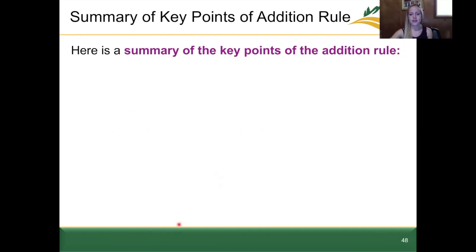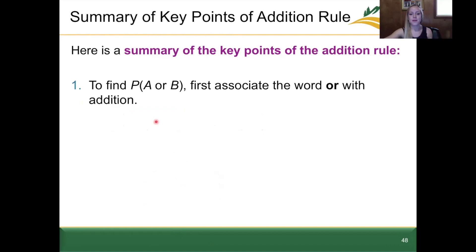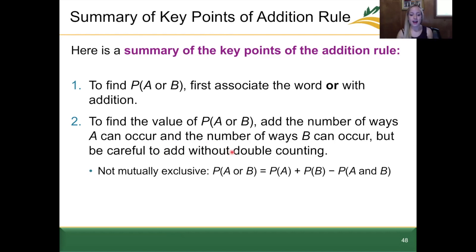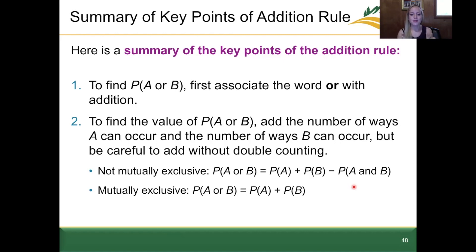Here's a summary of key points to the addition rule. Number one: we want to find the probability of event A or B occurring — the addition rule is associated with the word 'or.' We find this probability by determining the number of ways A can occur and the number of ways B can occur. Because we never want to count a scenario twice, we must determine if A and B are disjoint or mutually exclusive. If not mutually exclusive, use the full formula and subtract P(A and B). If mutually exclusive, P(A or B) = P(A) + P(B).